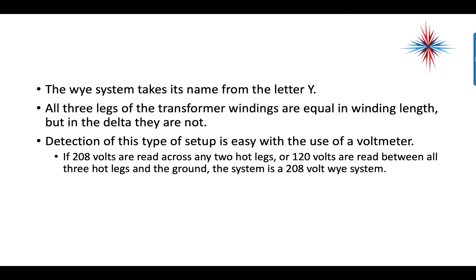The Y system takes its name from the letter Y. All three legs of the transformer windings are equal in length, unlike the delta where they are not. Detection is easy with a voltmeter: if 208 volts are read across any two hot legs, or 120 volts are read between all three hot legs and ground, the system is a 208-volt Y system.